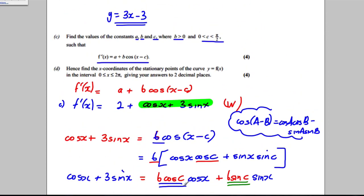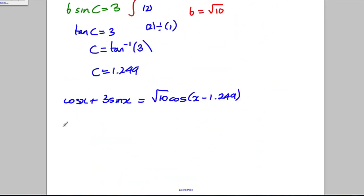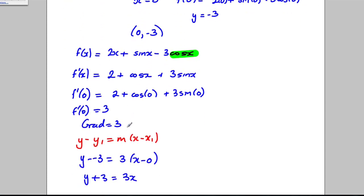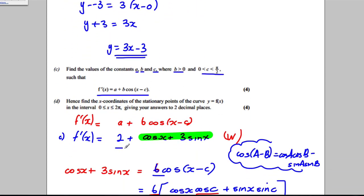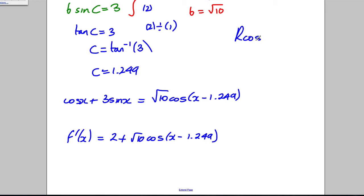We didn't just want that part — we wanted to write f'(x) in that form. So f'(x) = 2 + √10 · cos(x - 1.249). If you're unsure of the R-cos method, look at those videos first, or check the trigonometry section on Hegarty Maths.